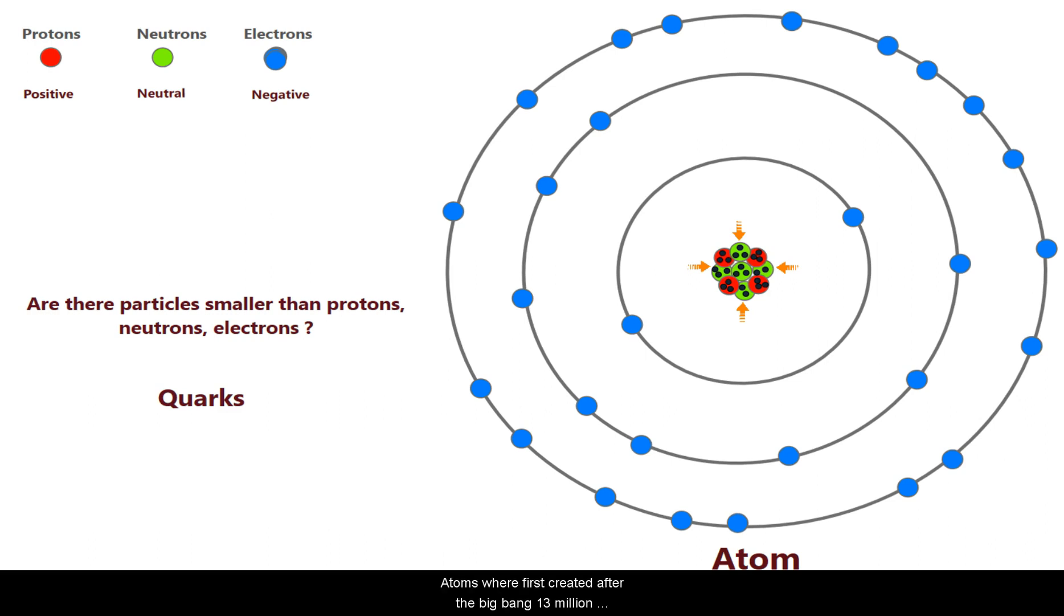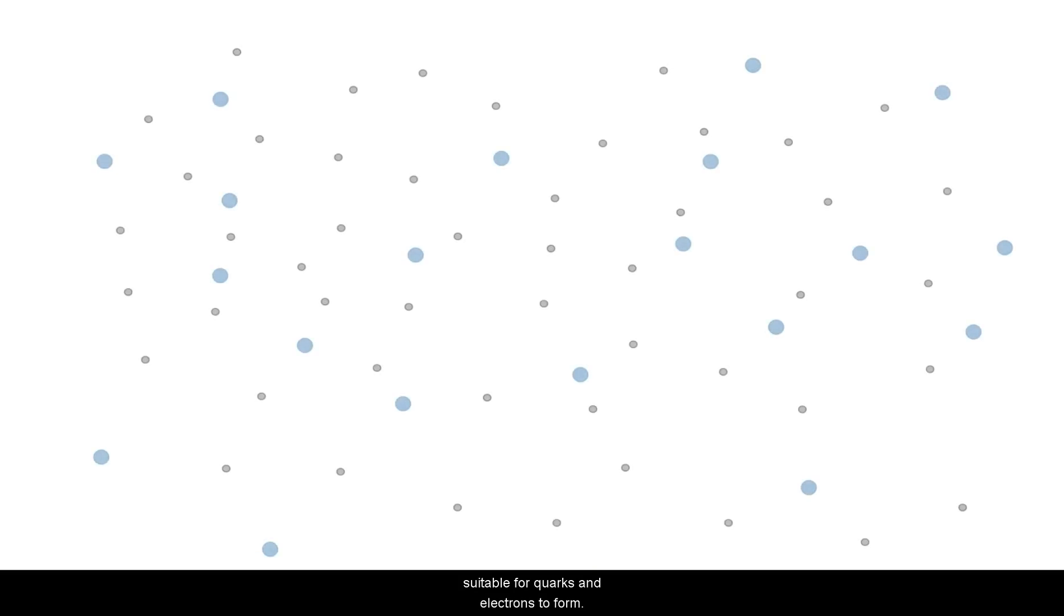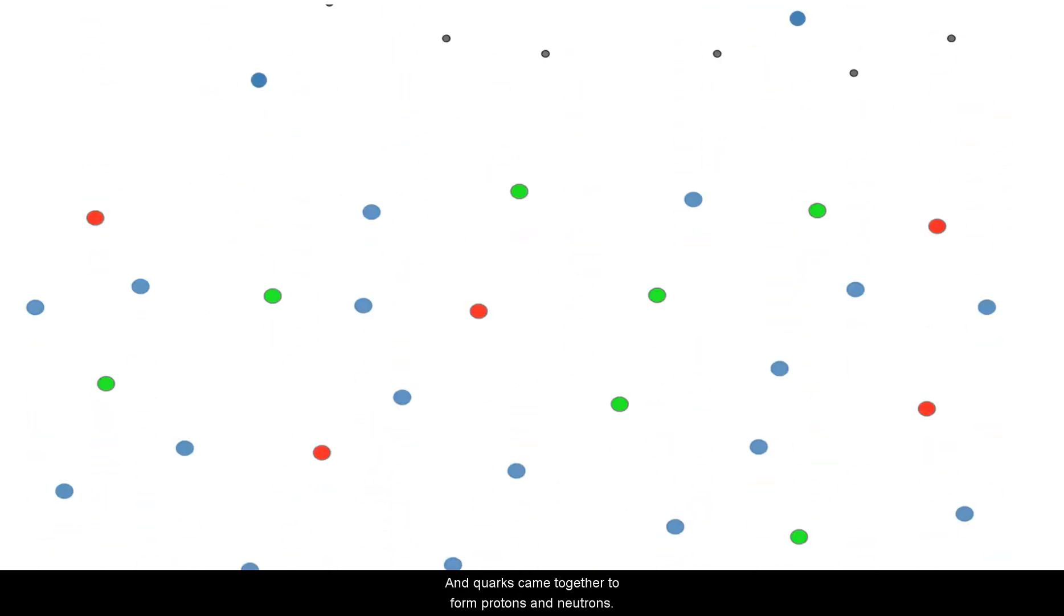Atoms were first created after the big bang 13 billion years ago. Immediately after big bang, universe was very hot and dense. Once the universe cooled a bit, condition became suitable for quarks and electrons to form. And quarks came together to form protons and neutrons.